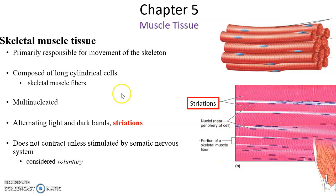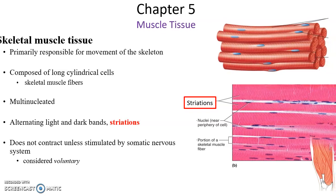Skeletal muscle tissue is, surprise, the primary tissue for the skeletal muscles — the muscles that are attached to bones. These cells are extremely long cylindrical cells; they can be the full length of the muscle. Some of our muscles can be a foot or two long, so those are extremely long cells. They're often called muscle fibers because they're so long and thin.